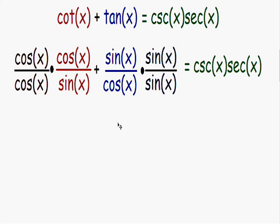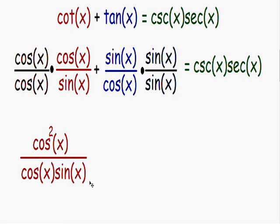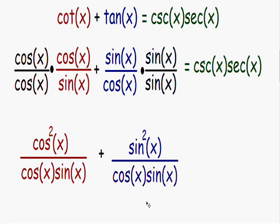Now I'll simplify everything a little bit. On the left-hand fraction, in the numerator we have cosine of x multiplied by cosine of x, which is cosine squared of x. In the denominator we have cosine of x multiplied by sine of x, which can't be simplified. On the right-hand fraction, the numerator is sine of x multiplied by sine of x, which is sine squared of x, and the denominator is still cosine of x multiplied by sine of x.